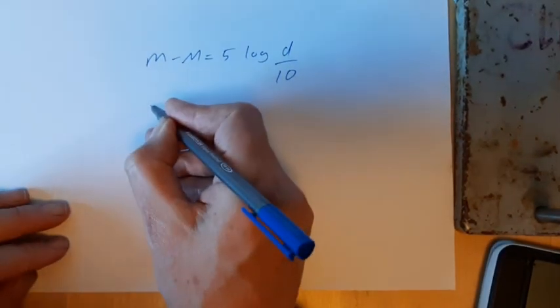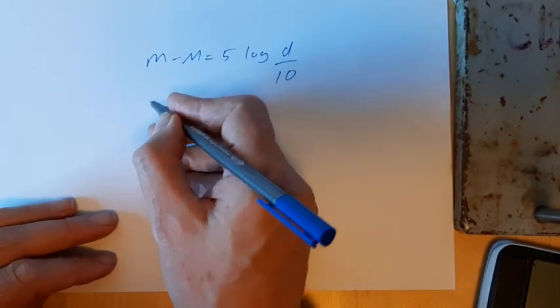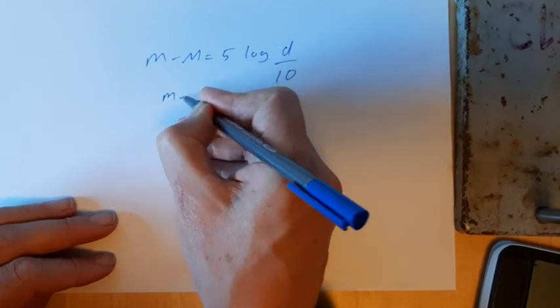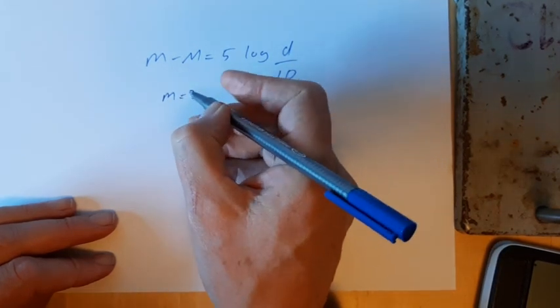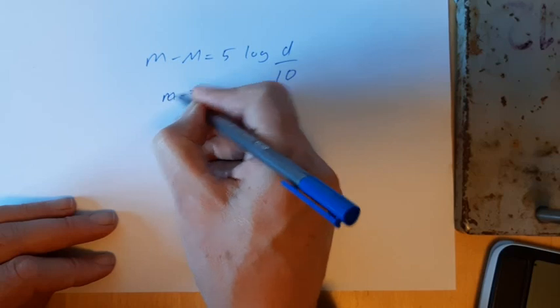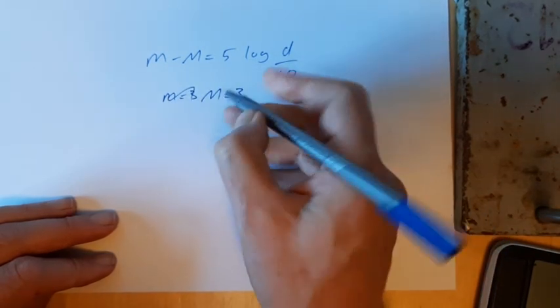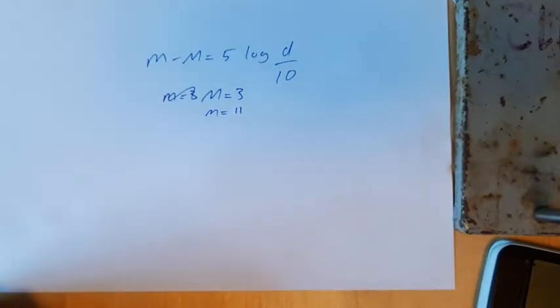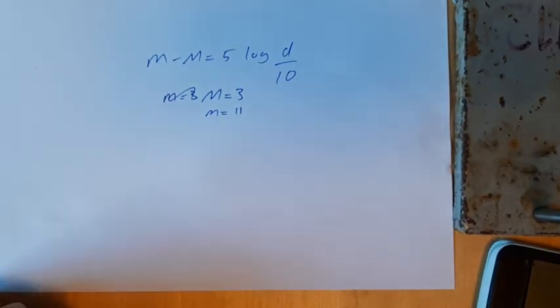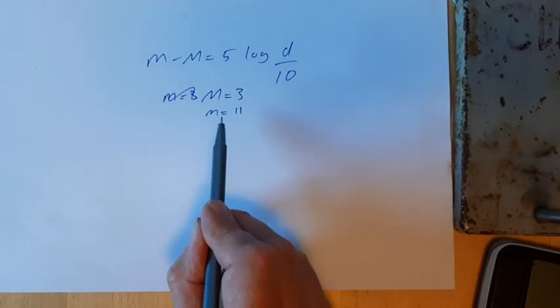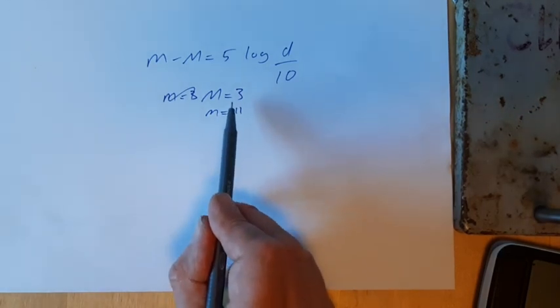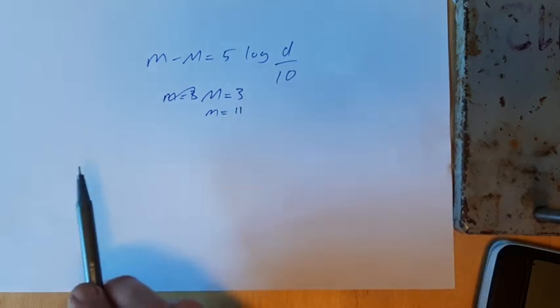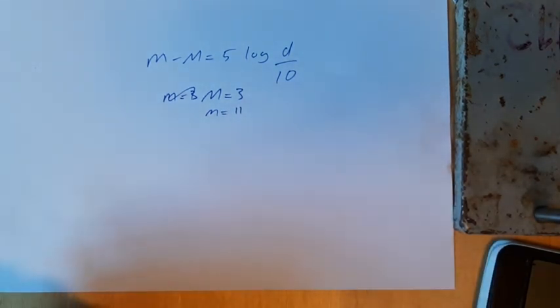So let's have a go through the answer now. We can see the absolute magnitude is 3 and the apparent magnitude is 11. So the first thing I notice is that when this star was moved to 10 parsecs, it got brighter, and therefore I'm expecting an answer that's greater than 10 parsecs.